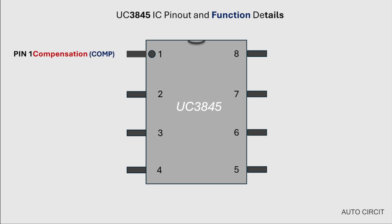Pin number 1 of the IC is the compensation pin. Pin number 2 of this IC is the voltage feedback pin. Pin number 3 of this IC is the current sense pin. Pin number 4 is the RT/CT oscillator timing components pin.